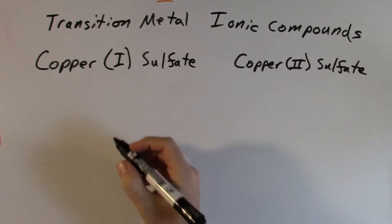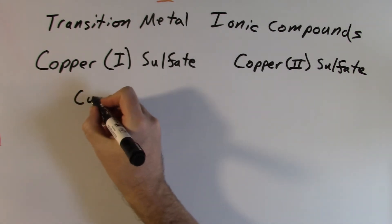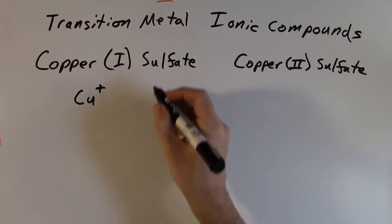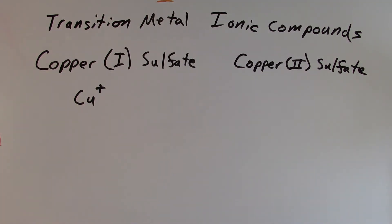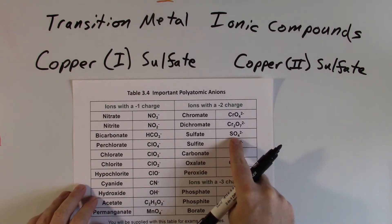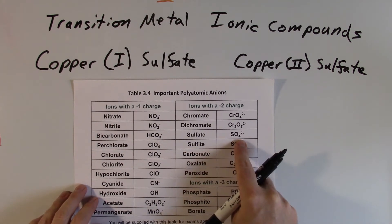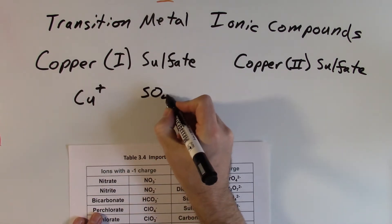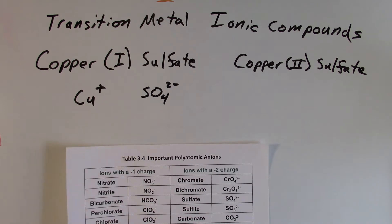And so for copper one sulfate, what I like to start off doing, I'll just write out my Cu atom there with a plus one charge for that. And then sulfate ion, we can figure out what that is from our list of polyatomic ions. Here's the sulfate ion over on the right hand side, sulfate. It's SO4, and it's got a negative two charge.